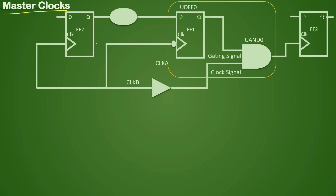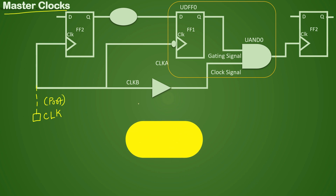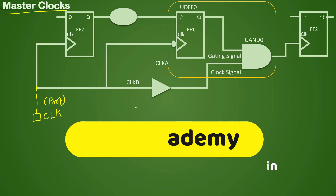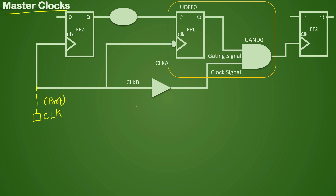Let us take an example here — we have seen this kind of circuit previously in the clock gating videos. This is your common clock path coming from a port named CLK. This is your clock source, and the master clock is the clock which is defined as a physical clock with a physical source or clock port. If it is your design where the clock source is not located, then it is coming from a clock port. Somewhere in your full chip, there will be a clock generator from where the clock is being generated — that is your PLL, the phase-locked loop.